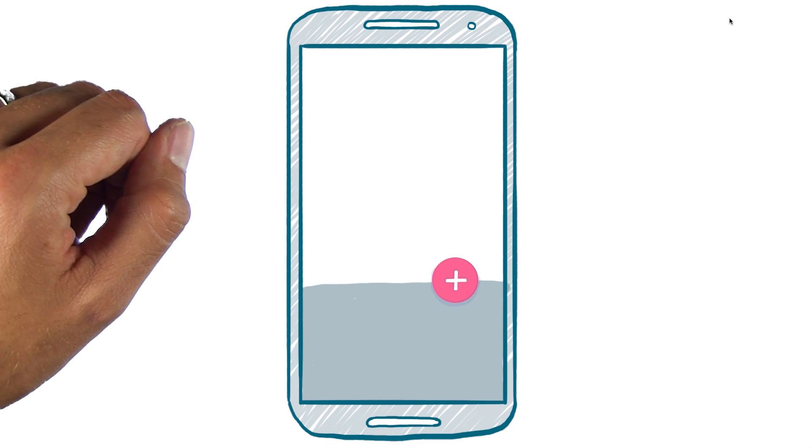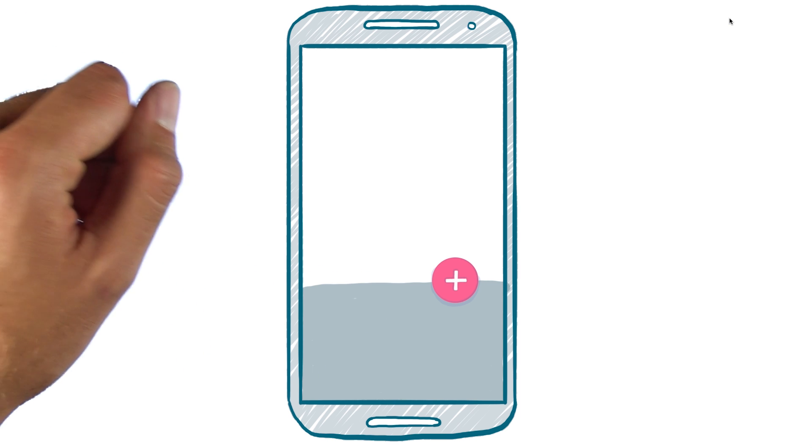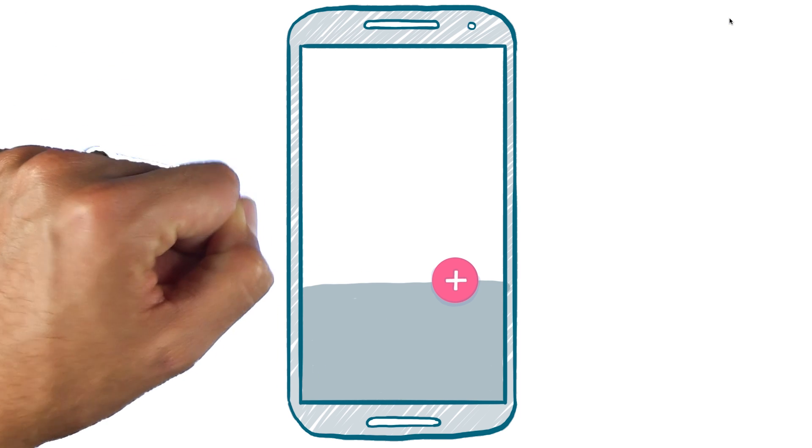A hallmark pattern of material design is using a floating action button, or FAB. This is a vibrant colored circular icon button that floats above the rest of your content in your app.